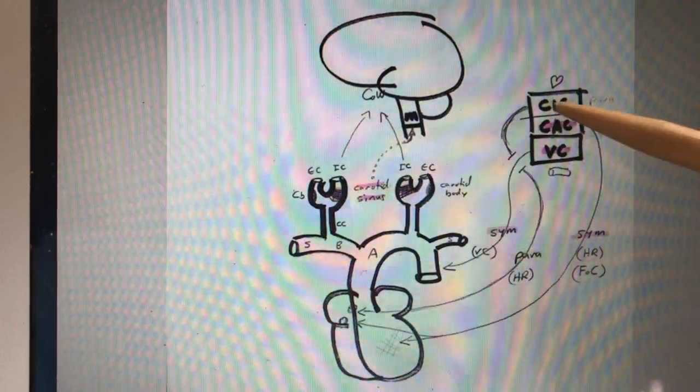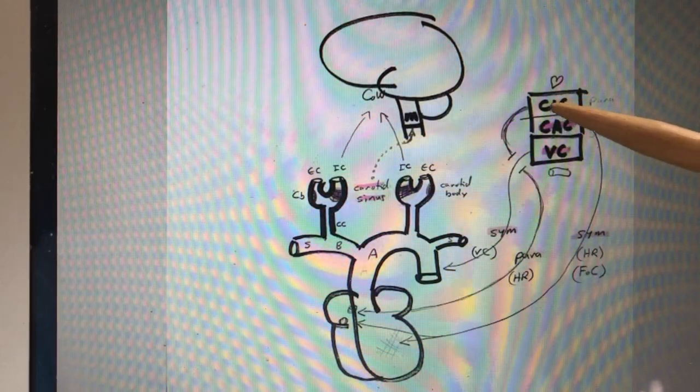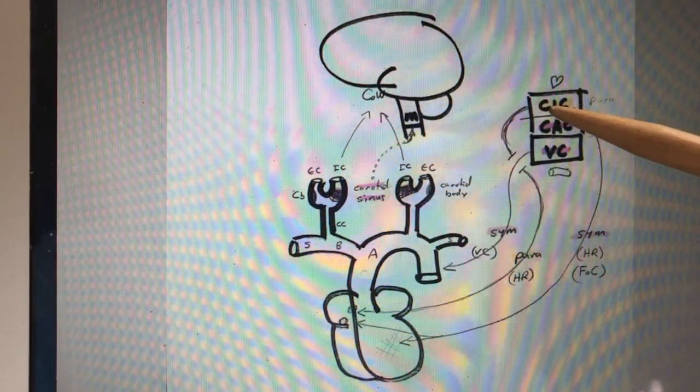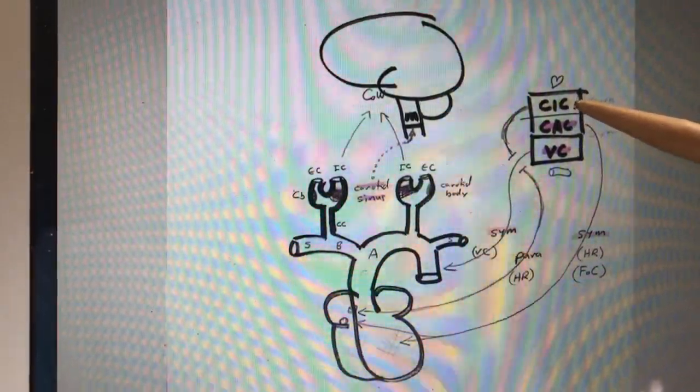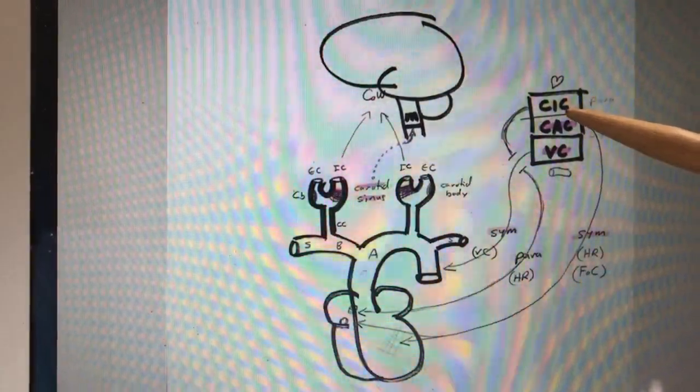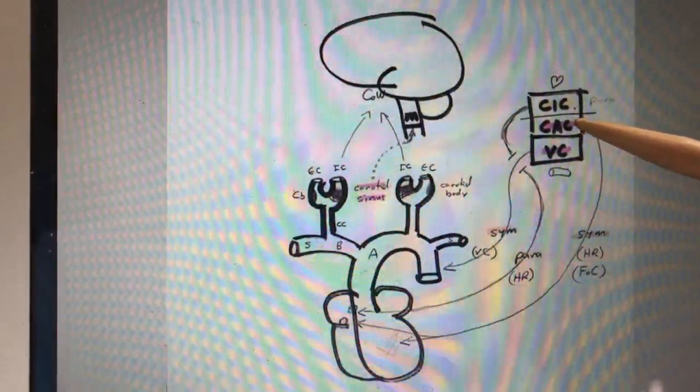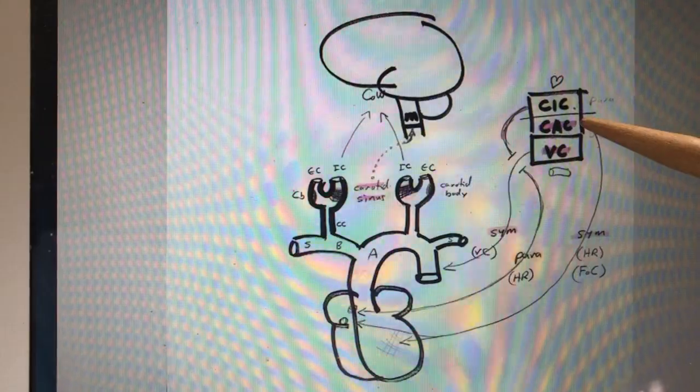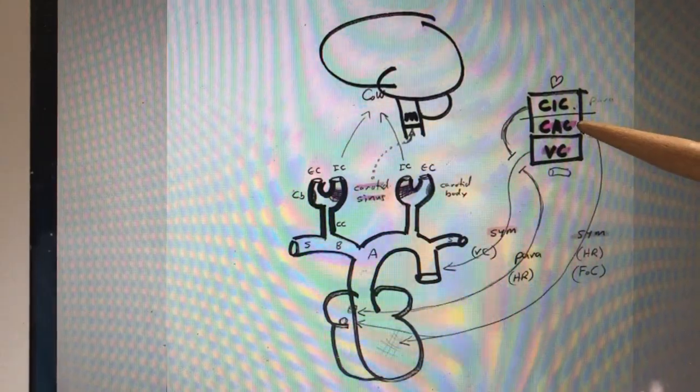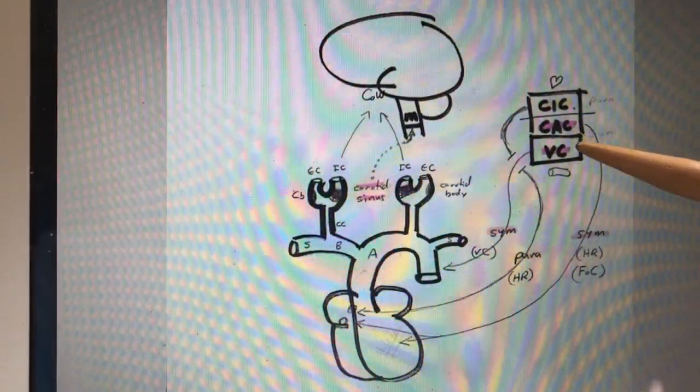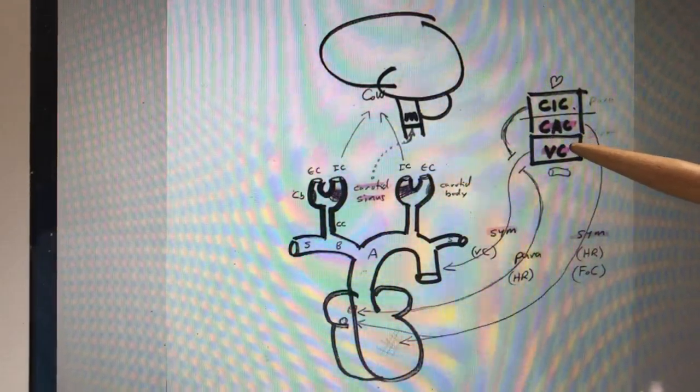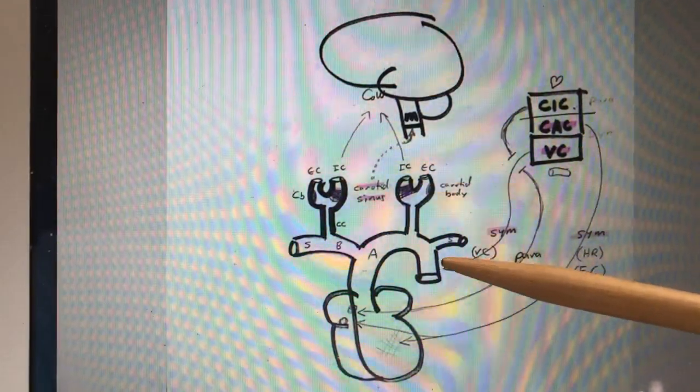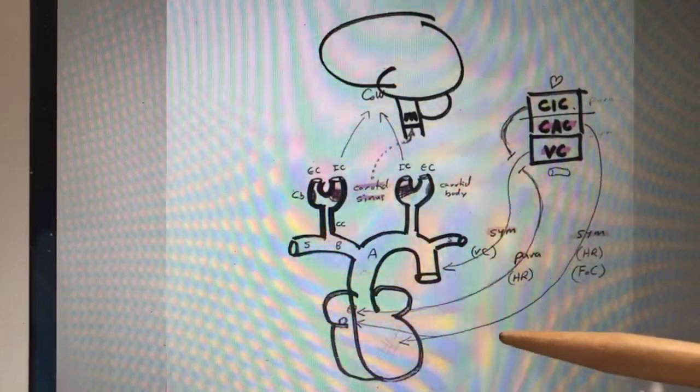what would happen is signals to the CAC would decrease the parasympathetic signals, thus allowing the heart rate to go up. It would increase the signals from the CAC, thus increasing the heart rate and the force of contraction, and it would increase signals from the vasomotor center, thus increasing vasoconstriction and thereby increasing blood pressure.